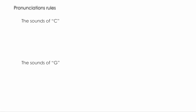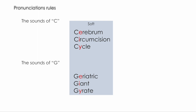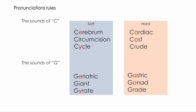The sound for some words depends on the letters that come after them. For example, the letter C followed by E, I, or Y should be pronounced softly, like in 'cerebellum,' 'cerebrum,' 'circumcision,' or 'cycle.' The letter G is also pronounced softly, as a J sound, like in 'geriatric,' 'giant,' or 'gyrate.' But when those vowels don't follow, we pronounce them the hard way — like 'cardiac,' 'cost,' 'crude' where C sounds like K, or 'gastric,' 'gonad,' 'grave' where G is pronounced hard.